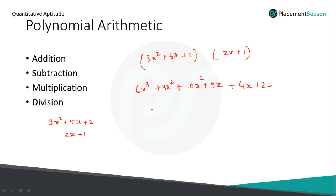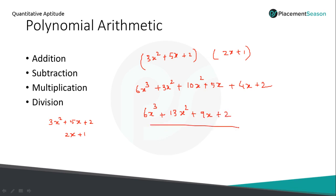Now apply the polynomial addition rule to collect like terms. 6x cubed has no other x cubed term, so we write 6x cubed directly. For x squared: 3x squared plus 10x squared equals 13x squared. For the x terms: 5x plus 4x equals 9x. Plus the constant 2. So the final answer for multiplication is 6x cubed plus 13x squared plus 9x plus 2.